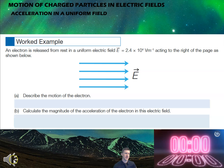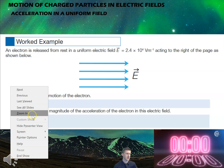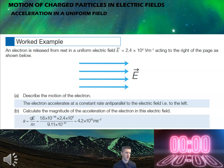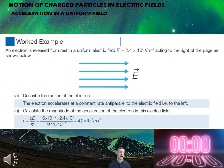Time's up — here are the answers. The electron accelerates at a constant rate anti-parallel to the field, because it moves in the opposite direction to the field lines. Using the a = qE/m formula, the magnitude of the acceleration is 4.2 × 10¹⁵ m/s².